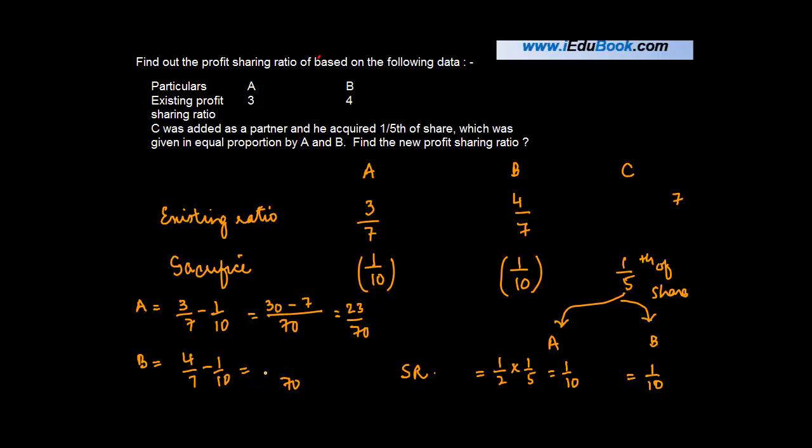B will give you, again the LCM is 70, 4 times 10 is 40 minus 7, which equals 33/70.